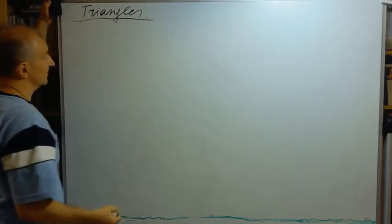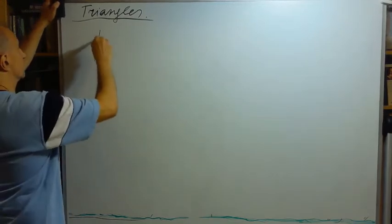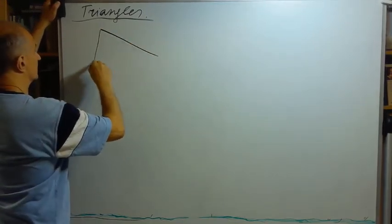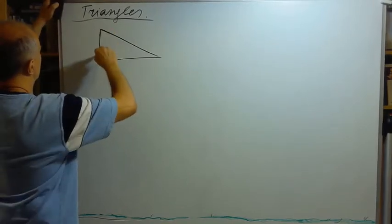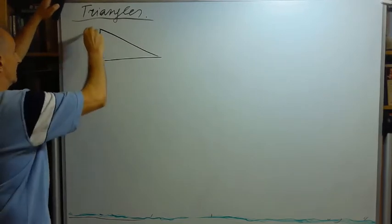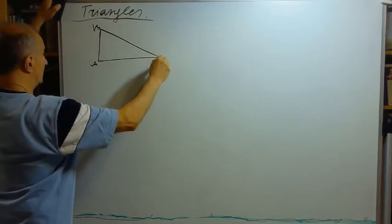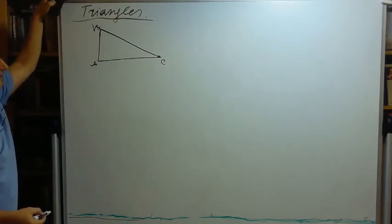Triangles. A triangle is a figure of three angles and three sides respectively. This, for instance, is a triangle. This is a triangle: A, B, C.